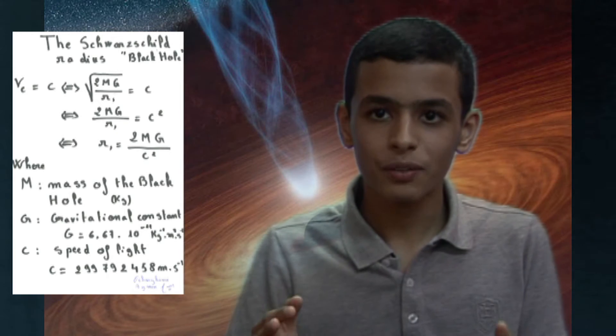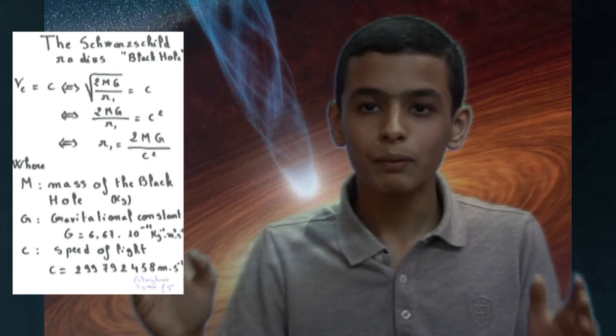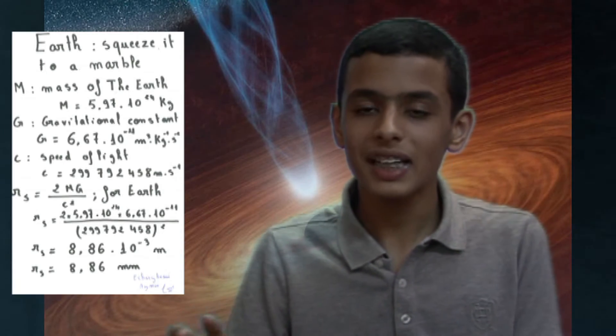Thus, the Schwarzschild radius is equal to 2 times capital M times capital G divided by the speed of light squared. That's why Earth would become a black hole if compressed to the size of a marble, with radius equal to 8.86 mm.